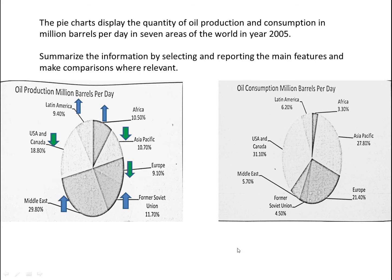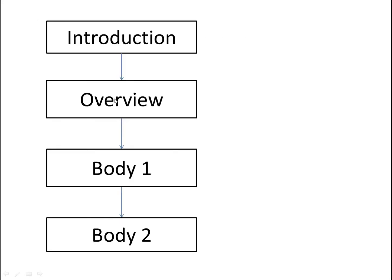Let's see the Band 9 answer structure for IELTS Writing Task 1. First we have to write an introduction, then an overview, then two body paragraphs. We can write only one body paragraph, but to group the information properly I always write two body paragraphs. In the introduction we just paraphrase the information provided by IELTS. In the overview we write the main striking feature of the graph — what is happening or what we can see very easily. Then in the two body paragraphs we explain the whole chart.